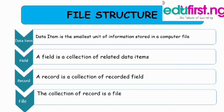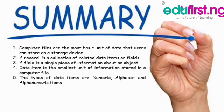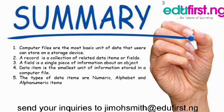For a record, it is a collection of related fields. A record could be information about a particular student — their name, date of birth, name of parents, and so on. A collection of records is called a file. So if we have several students' names and details, all their records put together form a file.